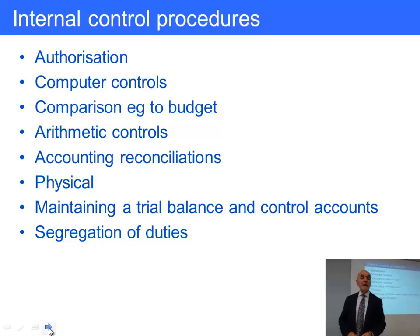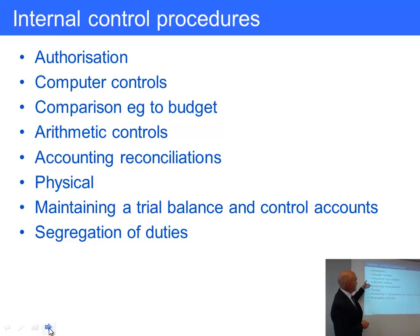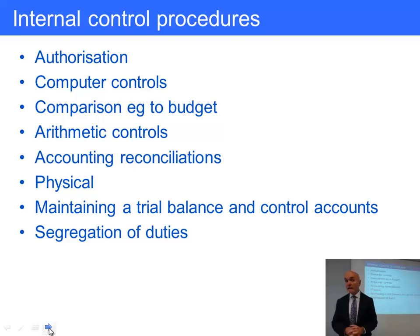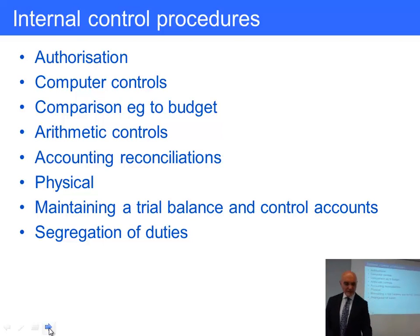Accounting reconciliations are a great control. A typical example is a bank reconciliation: your cash book shows $12,000 but the bank statement shows $11,000 — the $1,000 difference might be a timing difference or an error in your cash accounting. Similarly, a supplier statement says you owe $5,000 but you say $3,000 — the $2,000 gap might be an accounting error or a payment not yet received. The great thing about reconciliations is you are comparing your records to somebody else's records, which is a very strong piece of internal control.